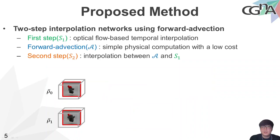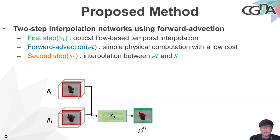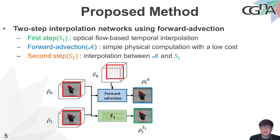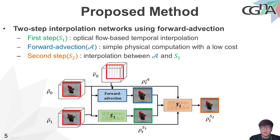This is an overview of the proposed method. The first step is to perform optical flow-based interpolation for two given smoke frames. In the second step, to reduce the inaccurate and blurry artifacts of the first step, we compute temporary in-between smoke frames by the forward advection process, which is a low-cost physical computation. After that, we interpolate between the forward advection results and the first step results.